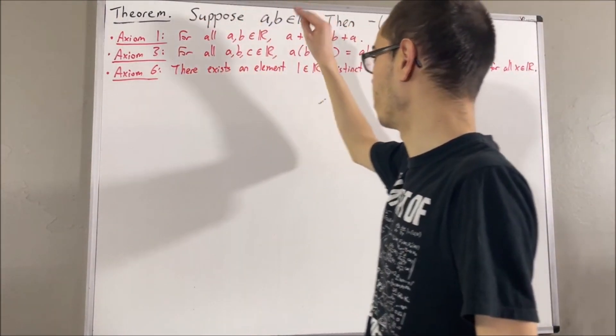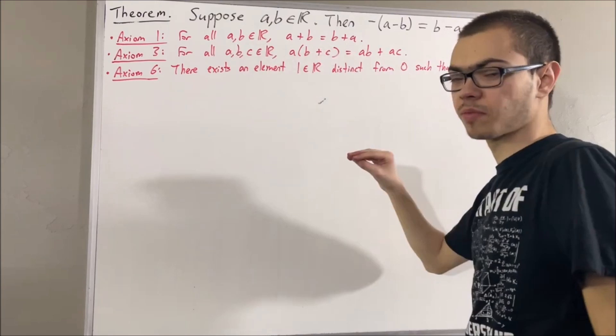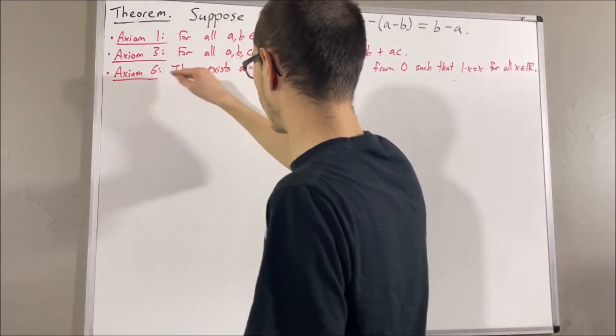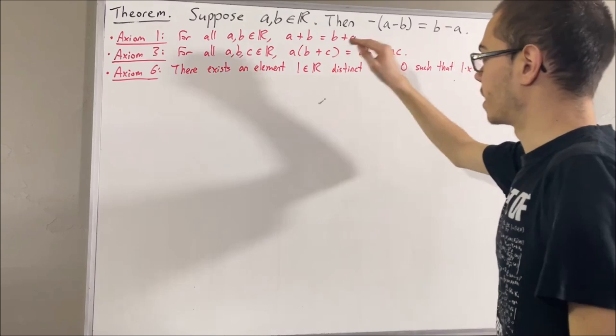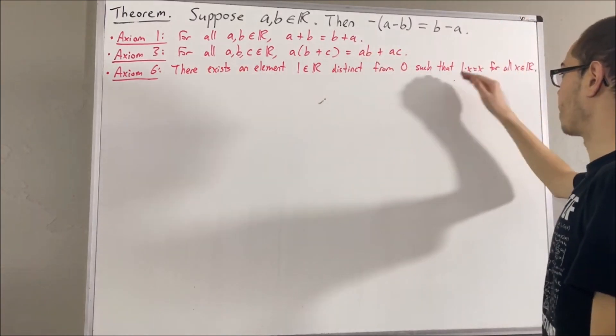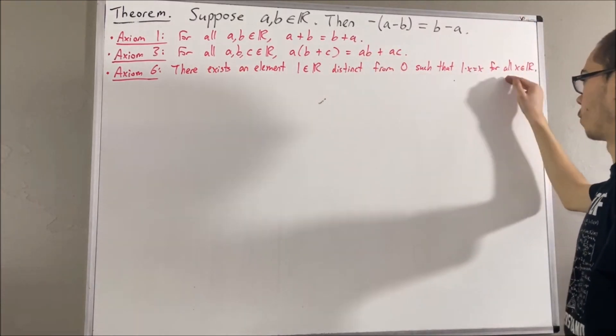Axioms 1 and 3 are just the commutative and distributive laws. Axiom 6 tells us that there exists a real number, which we call 1, that is distinct from 0 and has the property that 1 times x is equal to x for all real numbers x.